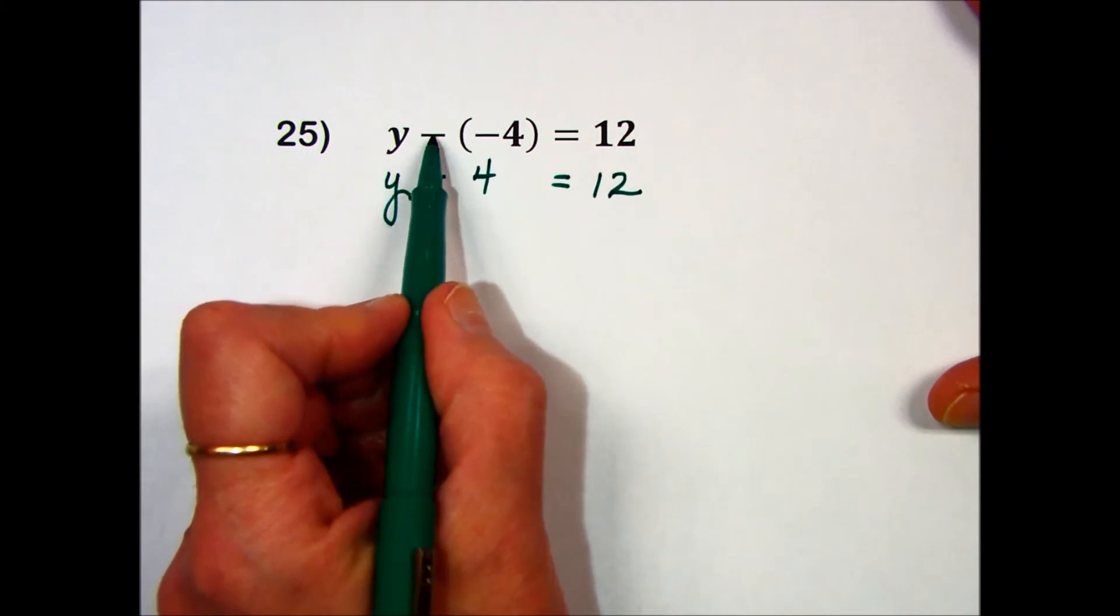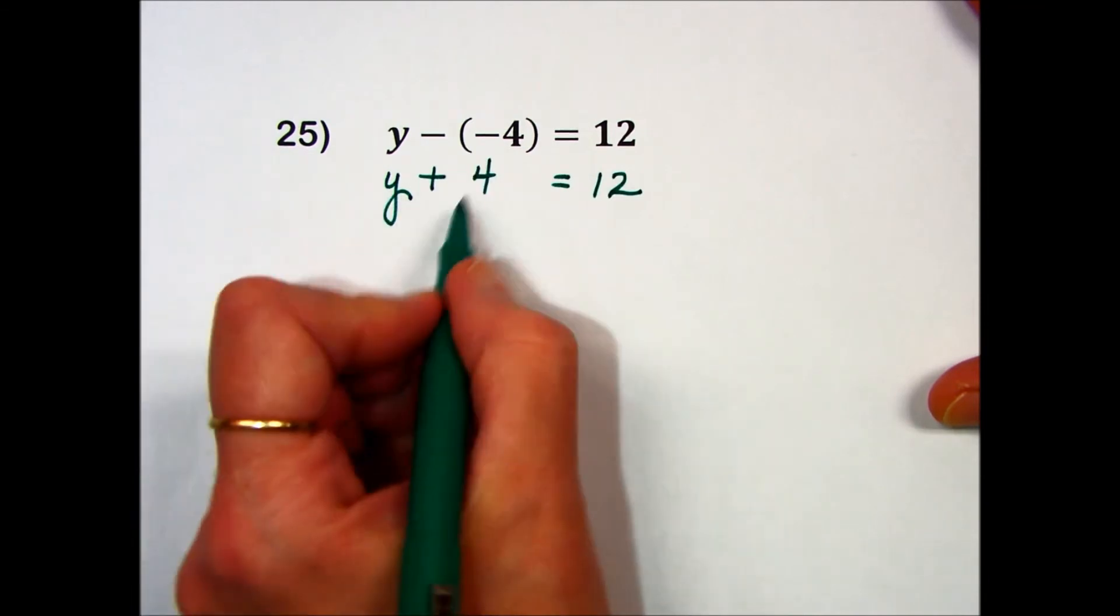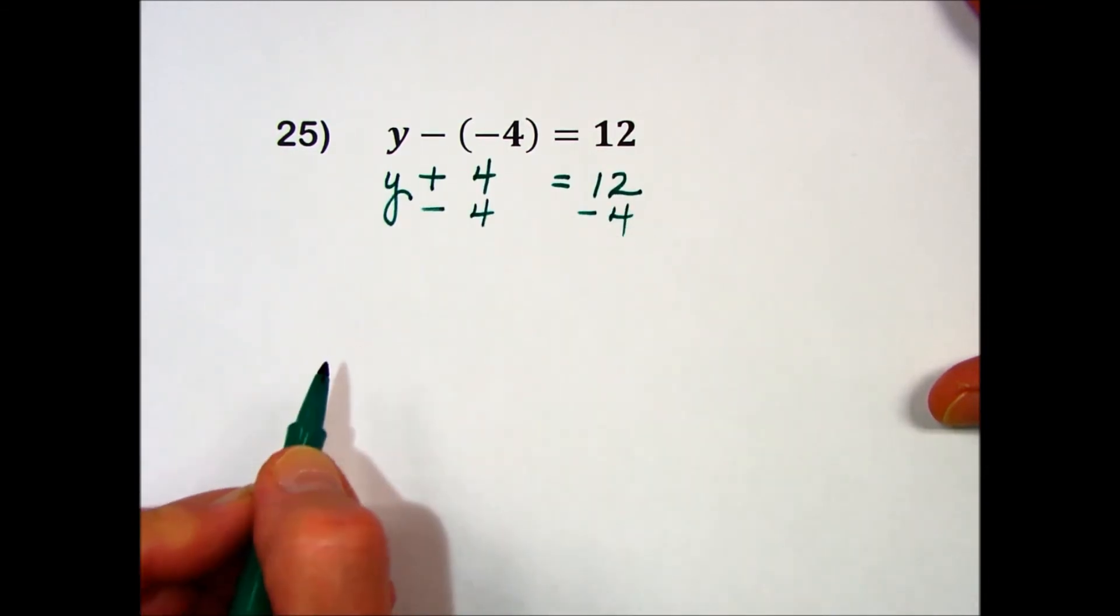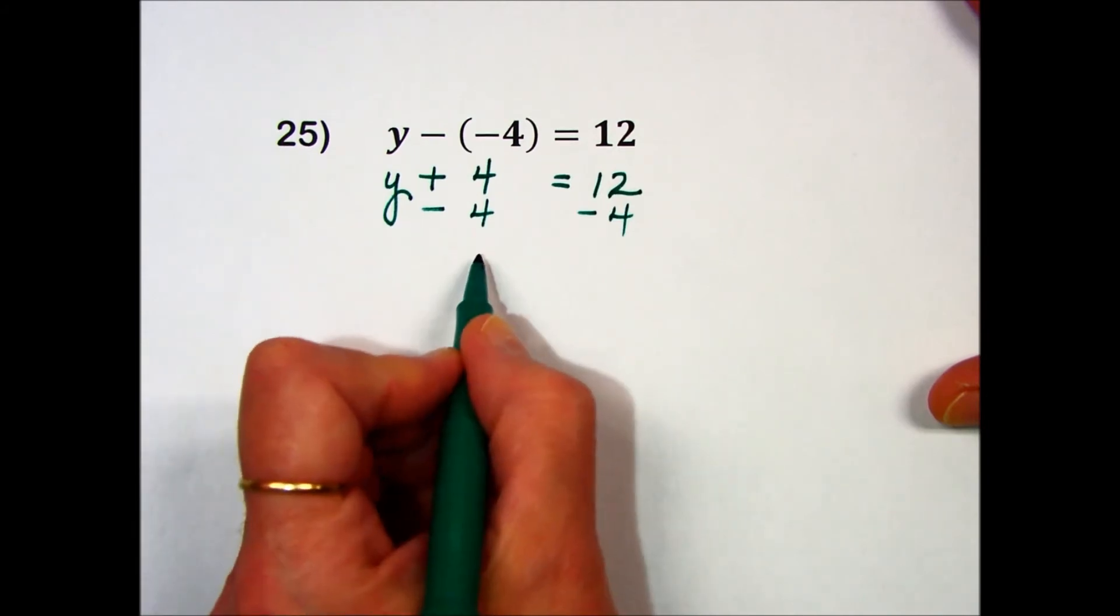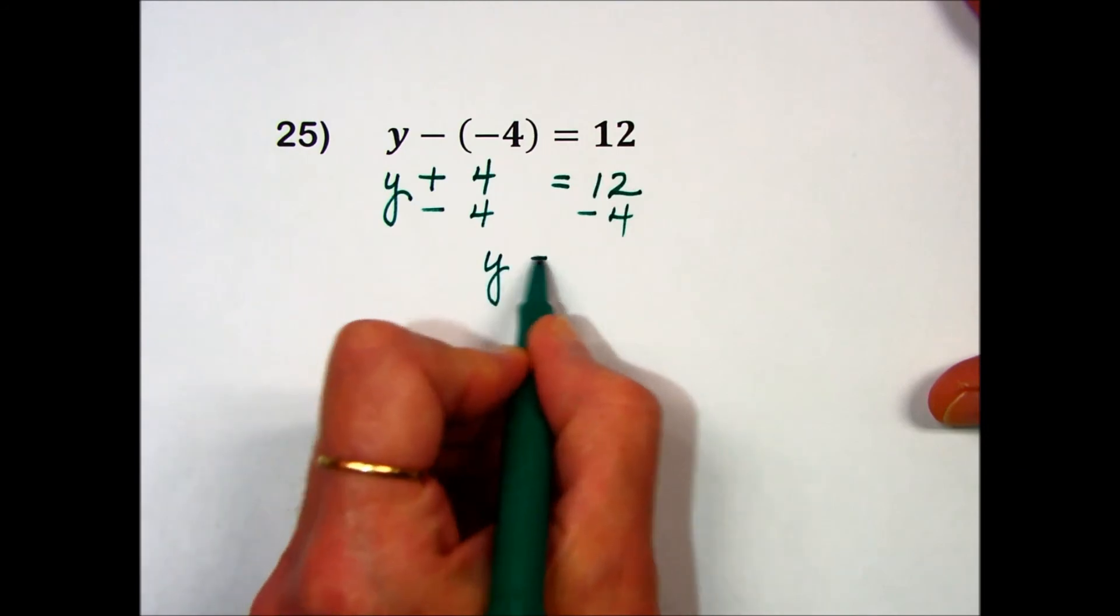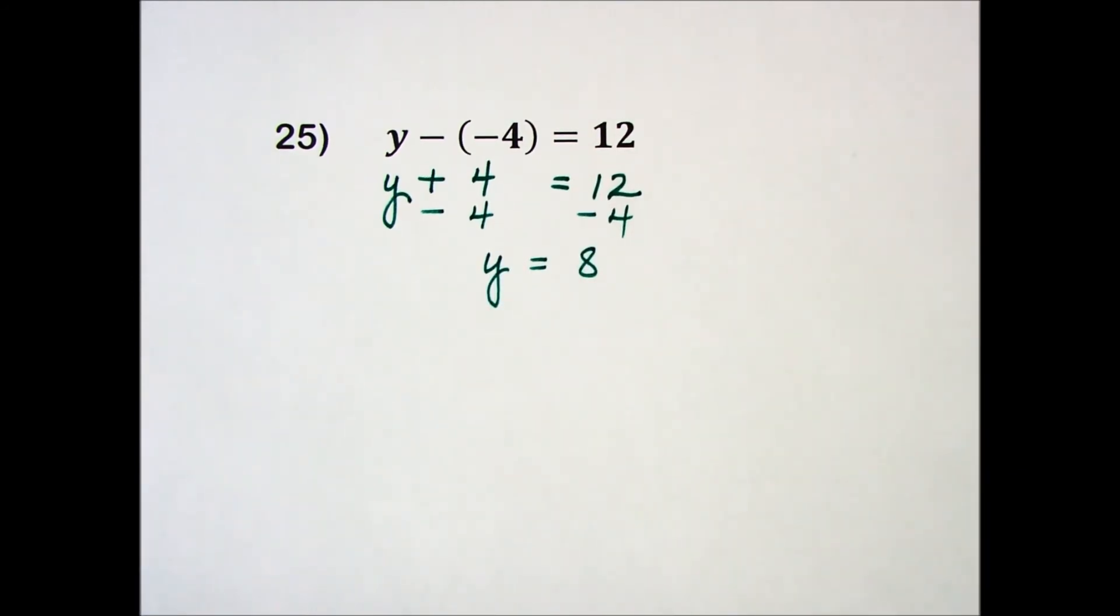You can also think of this as minus a minus will result into a plus. Now, the only thing left to do is to counter or undo that addition of 4 by subtracting 4. Plus 4 minus 4 is 0, y plus 0 is y, and 12 minus 4 is 8. Our solution is 8.